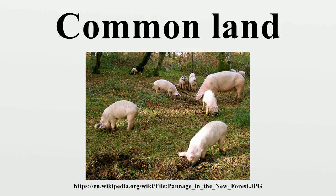A person who has a right in, or over, common land jointly with another or others is called a commoner. This article deals mainly with common land in England, Wales and Scotland, where the extent is much reduced due to enclosure of commons from the millions of acres that existed until the 17th century. However, a considerable amount of common land still exists, particularly in upland areas.